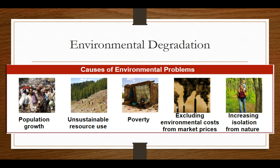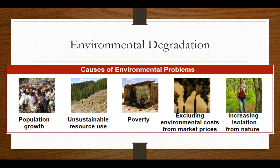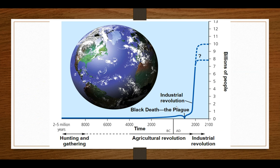Another cause is that we are not including environmental costs in our prices — companies are not paying for the cost of resource use, and consumers are not paying for the harmful environmental costs of certain items. Many companies, like oil and gas companies, receive tax breaks and subsidies from the government to keep their prices lower. Additionally, humans are increasingly isolated from nature as we move to urban and suburban areas, leading to what is called nature deficit disorder — not having enough contact with nature to develop appreciation for it and prevent environmental degradation.